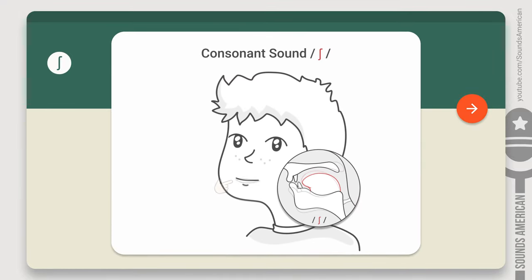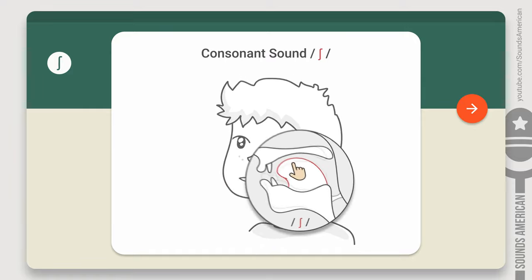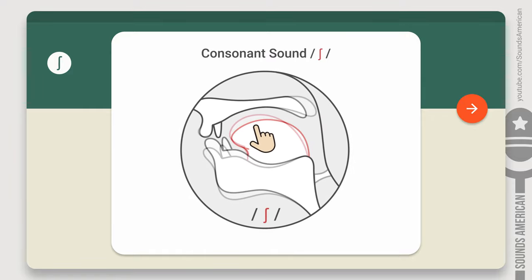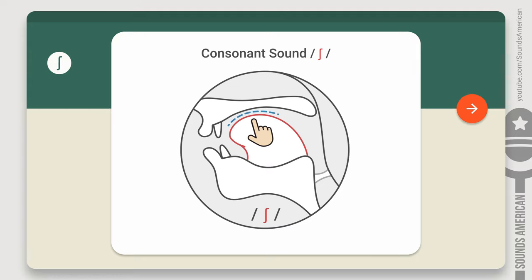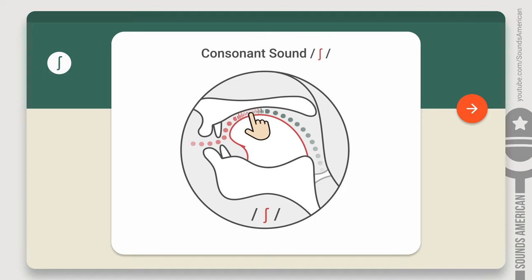Slightly open your mouth and round your lips — you may push them out a little. Now, focus on your tongue. Arch your tongue and raise it to the roof of your mouth, but don't touch it. Make sure there's a small gap between them. Next, release a stream of air over your tongue. When the air flows between the blade of your tongue and the roof of your mouth, it'll create lots of noise.